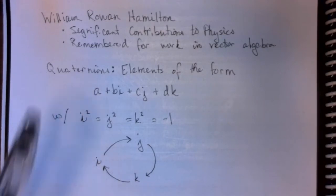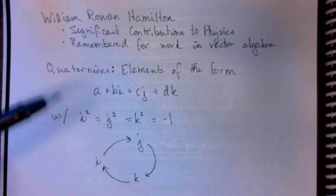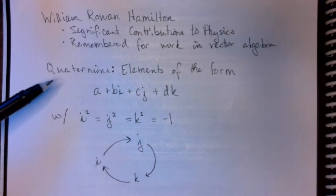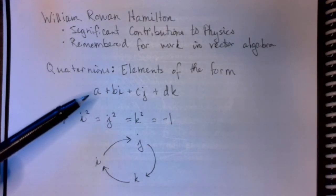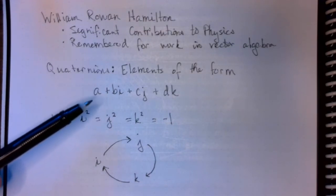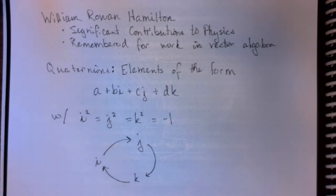So the quaternions are Hamilton's famous contribution to algebra, and the quaternions are a four-dimensional number system. By the 19th century, mathematicians had become quite comfortable with the real number system, which is one-dimensional, and the complex number system, which is two-dimensional.